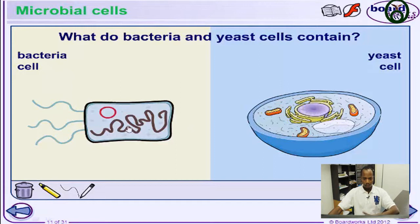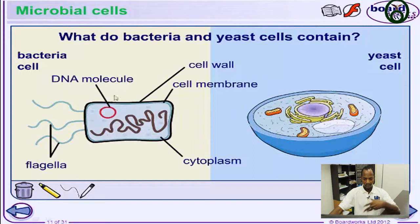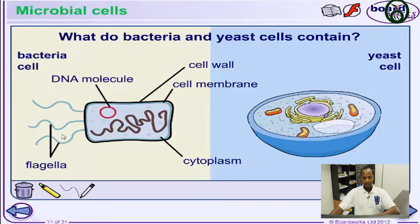Bacterial cells contain DNA molecules, flagella, cell wall, cell membrane, and cytoplasm. The DNA molecules contain the genes and everything the cell is made of. The flagella enables the movement — locomotion — of the organism.